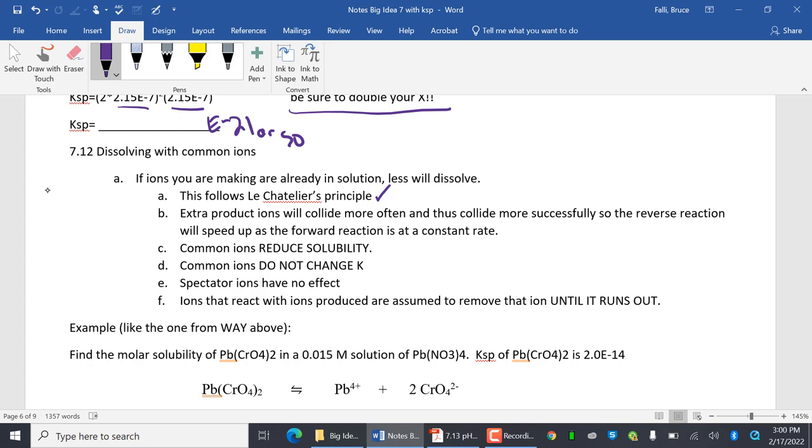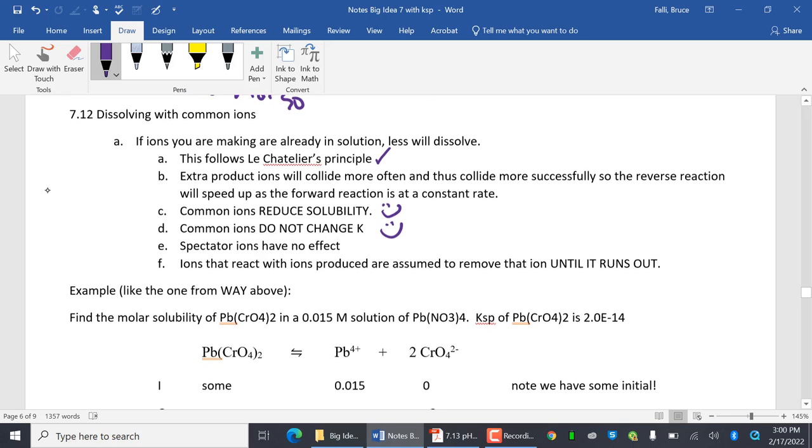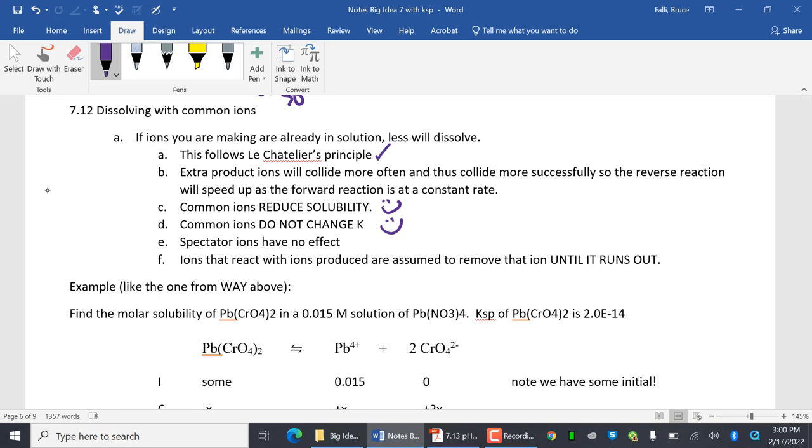Extra products will collide more often and thus collide more successfully to the reverse reaction. Common ions reduce solubility. You need to be comfortable with that. Common ions do not change K. It's not temperature. Spectator ions have no effect. That's true always. Ions that react with the ions produced. So if I have something that will react, it's assumed to remove them until it runs out.